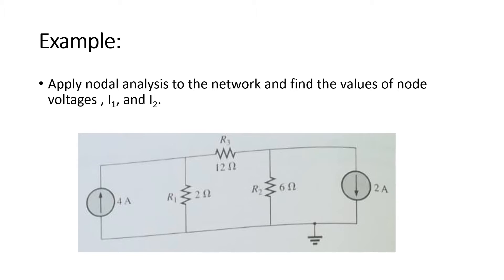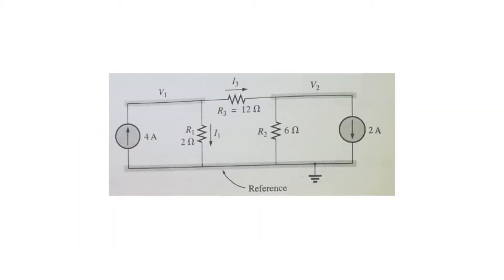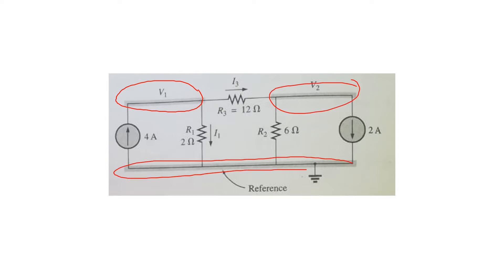Let us consider a circuit in which we have to find the values of I1 and I2 using nodal analysis. In the first step, we have to find the nodes. You can see from the figure that we have node 1 here, node 2 here, and the reference node which is at zero potential. So in this circuit, we have only two nodes, V1 and V2, and we have to find the values of V1 and V2.